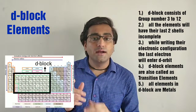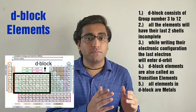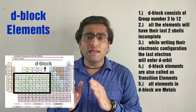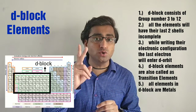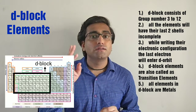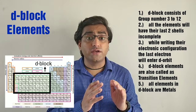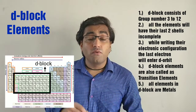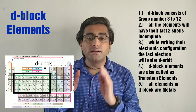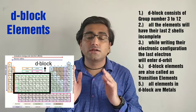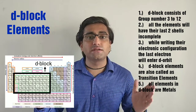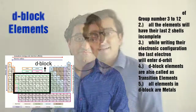Now let us learn the characteristics of D block. Point 1, D block consists of group numbers 3 to 12. Point 2, all elements in the D block have their last 2 shells incomplete. Point 3, the last electron enters the D orbit. Point 4, D block elements are also called transition elements. Point 5, all elements in the D block are metals.